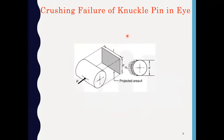Crushing failure of the knuckle pin. Sometimes there may be chances of crushing failure. In crushing failure, the projected contact area of the pin is considered. D is the diameter of the knuckle pin and L is the length or thickness of the single eye or double eye.